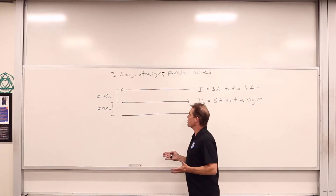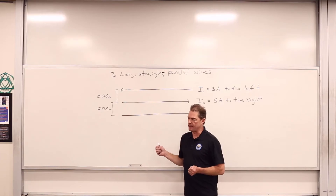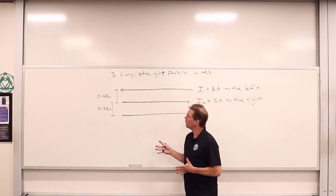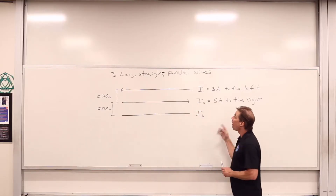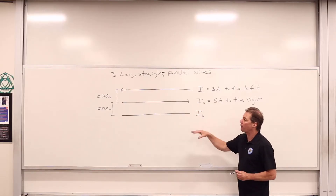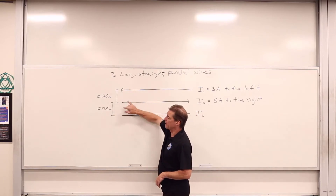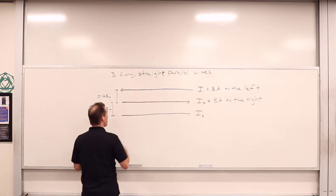Justin Miller here, Oxnard College Physics. We're going to look at a nice problem. We've got ourselves three long straight wires that are all parallel to one another, separated consecutively by 0.125 meters.